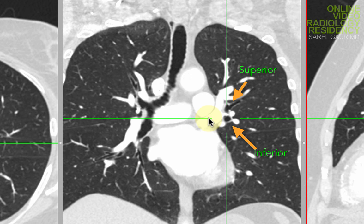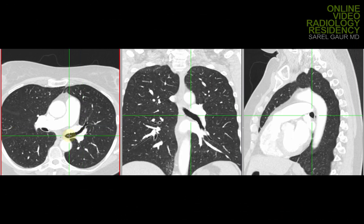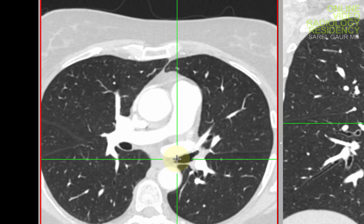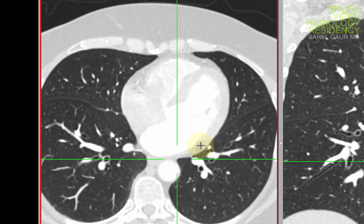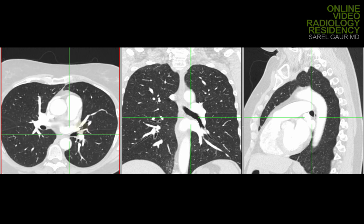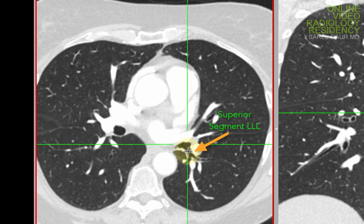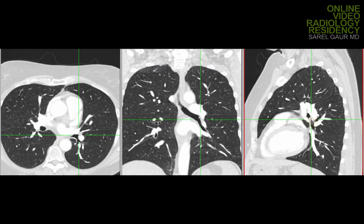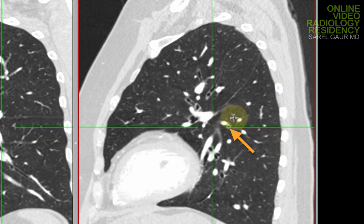You can see one branch that is superior and one that is inferior — the two segments of the lingular lobe: superior and inferior. This is also nicely appreciated on the axial image, where you can see two sets of bronchi — the superior segment, and if I scroll down, the inferior segment. You can see how this lobe hugs the heart. Now for the left lower lobe, you can already see a branch coming out posteriorly — that's the superior segment of the left lower lobe, branching superiorly and posteriorly on the sagittal image.